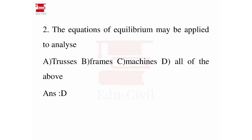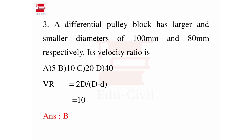A differential pulley block has larger and smaller diameters of 100 mm and 80 mm respectively — find the velocity ratio. The equation is VR = 2D divided by (D minus d), where D is the larger diameter and d is the smaller diameter. So: 2 × 100 divided by (100 − 80) = 200 / 20 = 10. The velocity ratio is 10.